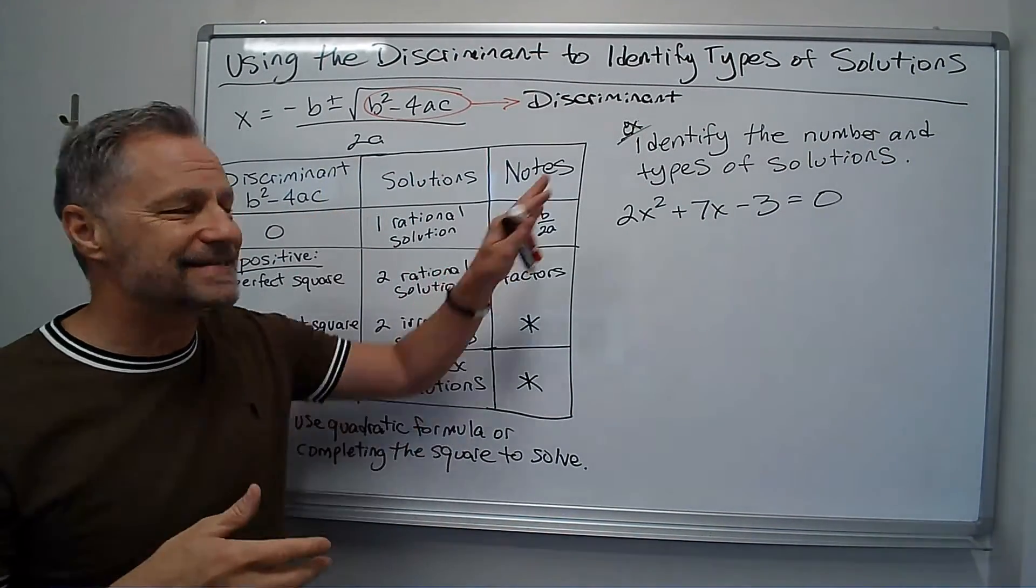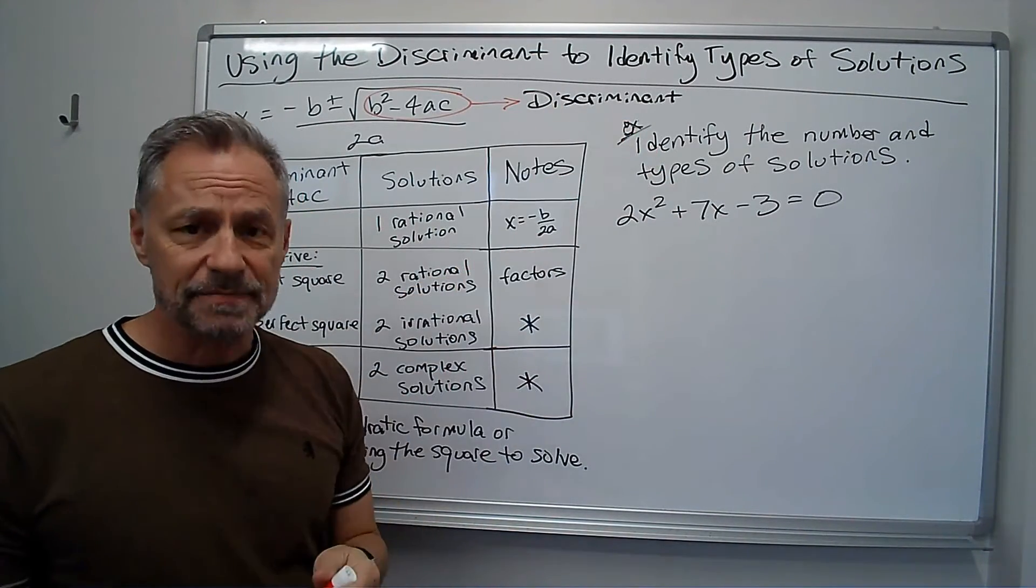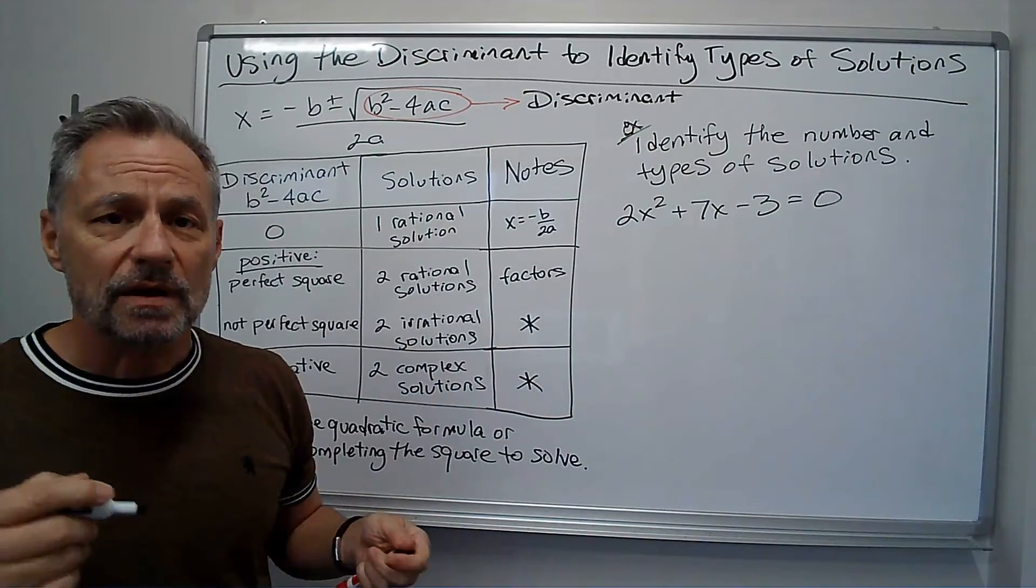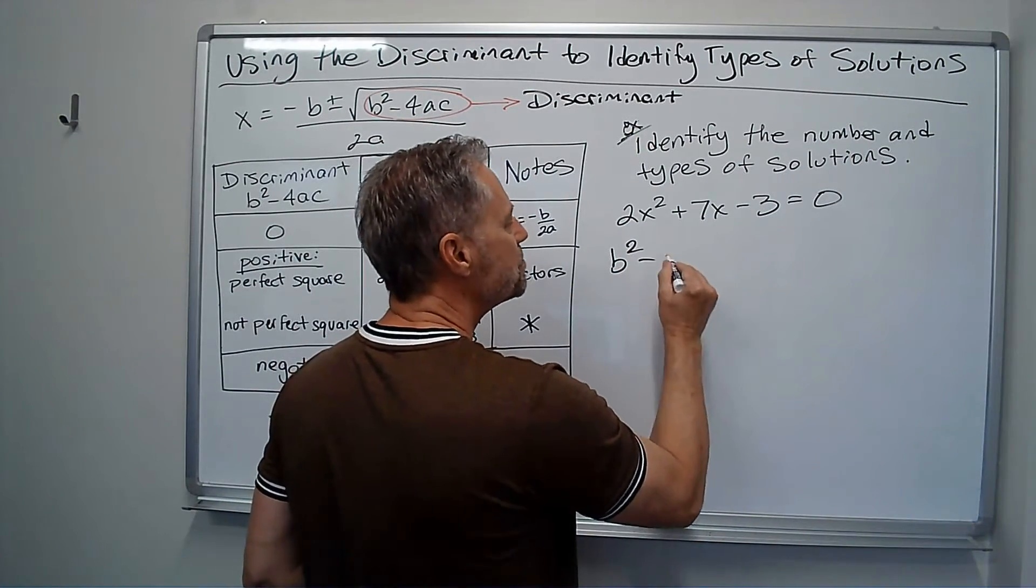Let's just look at an example of how I would use this. So I've got a quadratic equation here. It says identify the number and types of solutions. I'm just going to use the discriminant. I'm going to say, let's look at b² - 4ac.